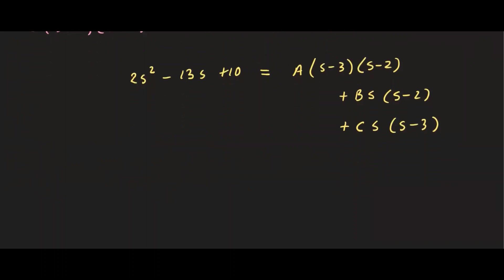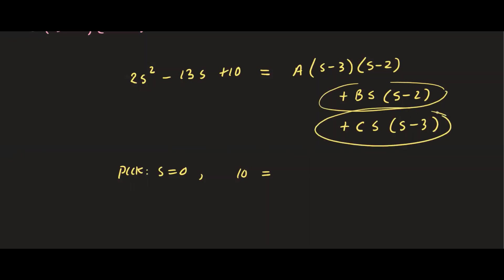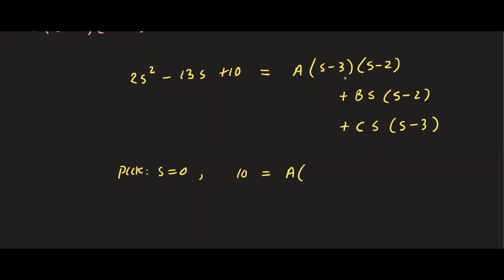Setting s = 0, the B and C terms drop out, leaving 10 = A times (−3)(−2) = 6A. So A = 5/3. Setting s = 3, the A and C terms vanish. We get 18 minus 39 plus 10 on the left, which equals 3B, so B = negative 11 over 3.